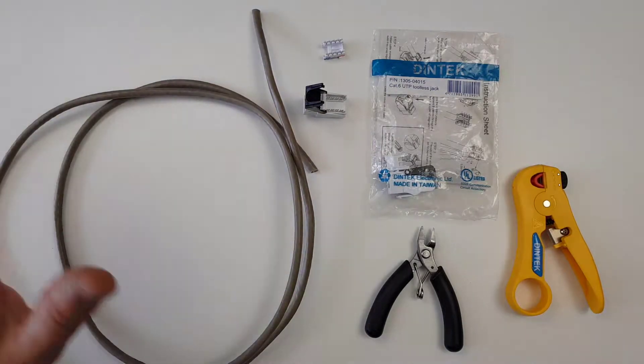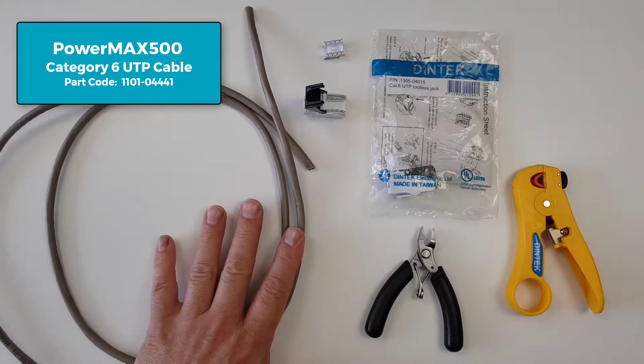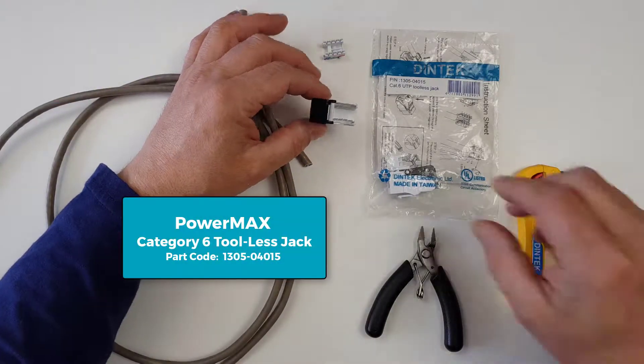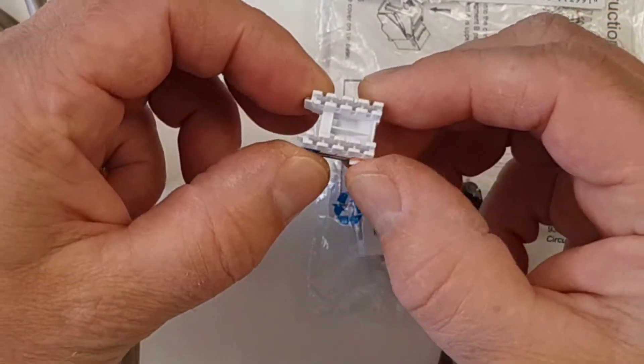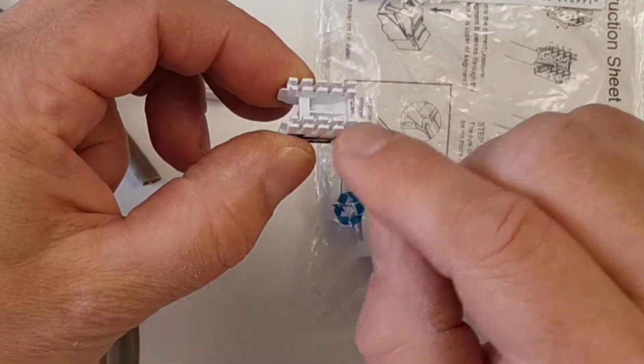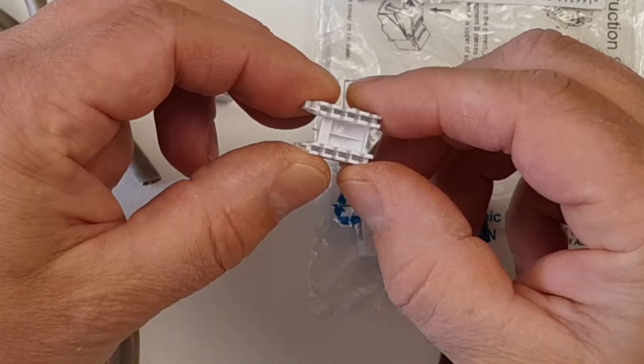So what we are going to need for this is our CAT6 UTP cable. We will be using the tool-less jack here, which comes also with a cable guide to keep the wires in place in their correct configuration.